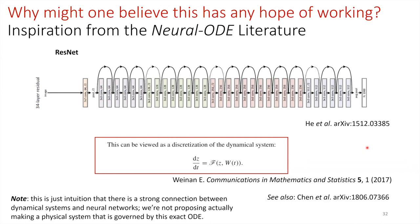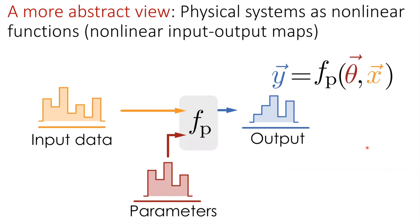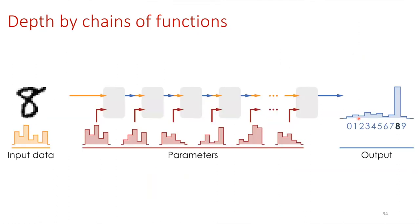More concretely, we construct our system out of gray boxes — physical systems where we put in input data x and tunable parameters θ, which gives an output y. Each physical system evolution is an abstract input-output map: y = f(x, θ). We then construct deep neural networks by chaining these functions, just as in conventional approaches.